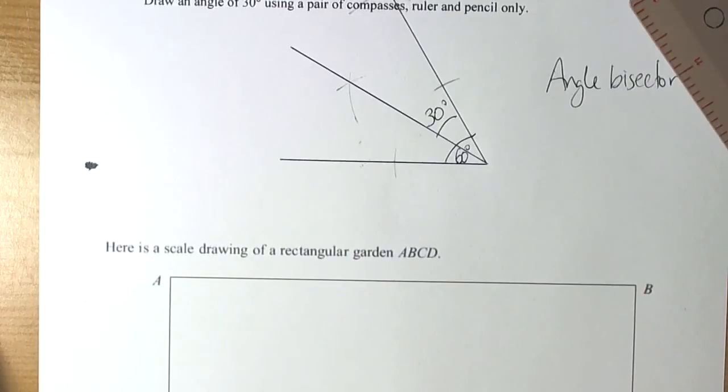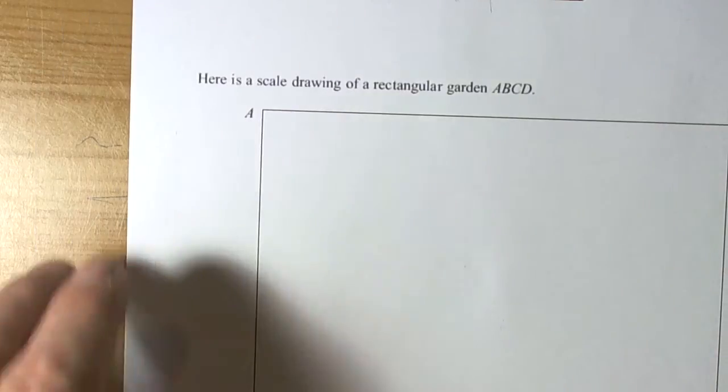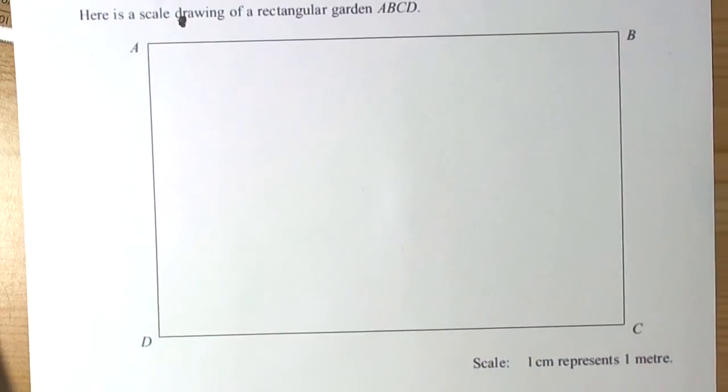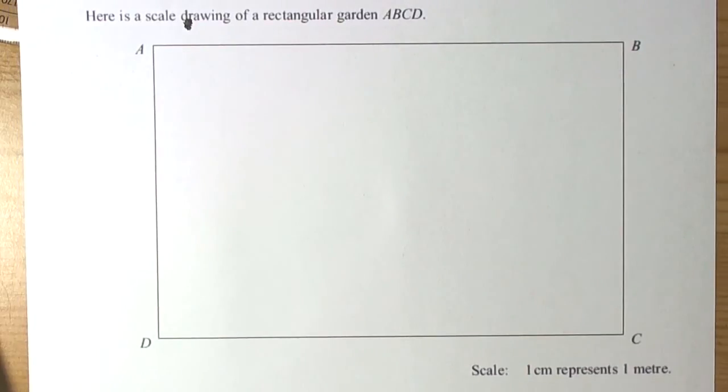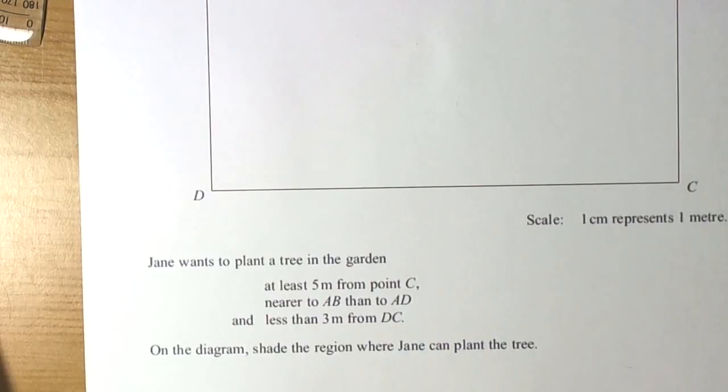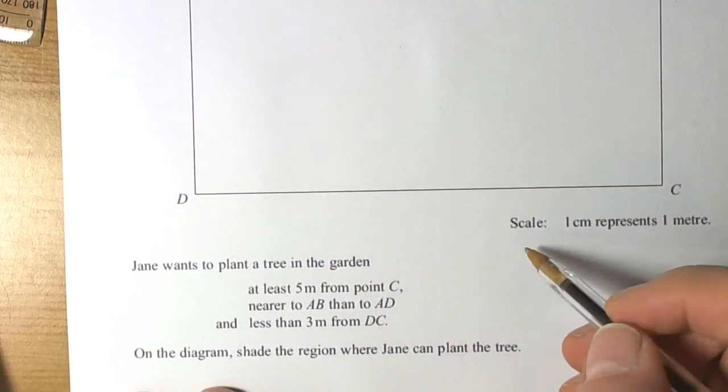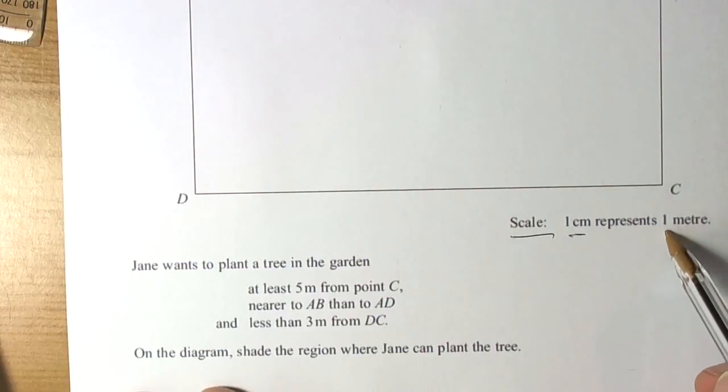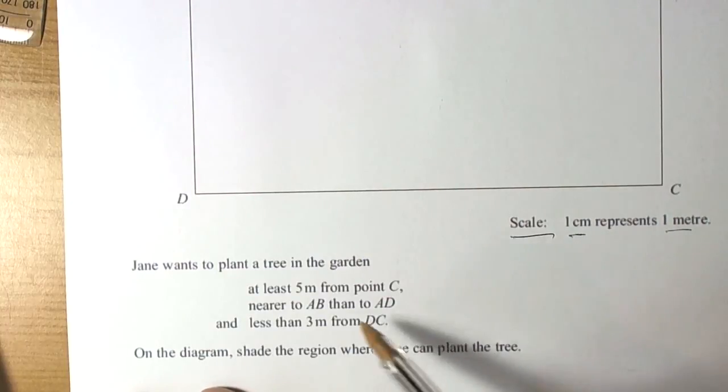Now, a typical exam question that involves constructions and loci is something like this. We've got here a rectangular garden and they're going to give us some conditions to work with. We look through the conditions and decide what each of them are telling us. The first thing to notice is there's a scale. We're going to be using one centimetre to represent any metres that they give us in the question.